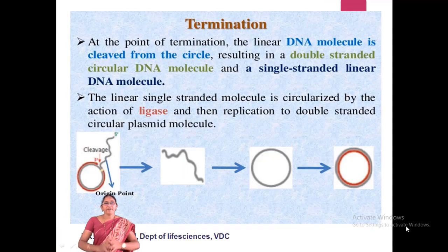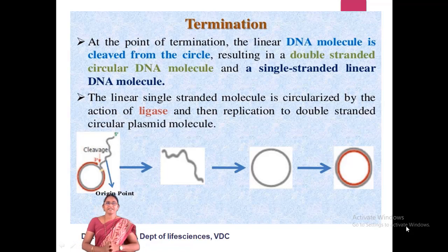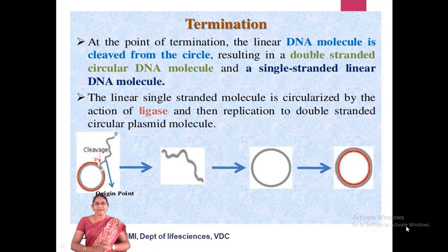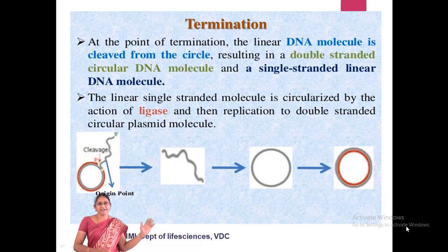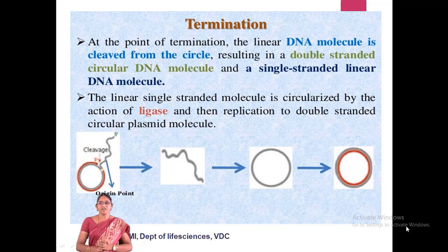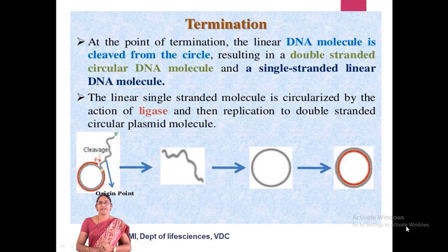Coming to termination — at the point of termination, the linear DNA molecule is cleaved from the circle, resulting in a double-stranded circular DNA molecule and a single-stranded linear DNA molecule. The linear single-stranded molecule is circularized by the action of ligase and then replicated to form a double-stranded circular plasmid molecule. A nick is formed, DNA synthesis initiates, the outer circle displaces as a thread and becomes circularized, and the nick is sealed by the ligase enzyme, producing a single-strand covalently closed circular DNA on which double-stranded DNA is then synthesized.